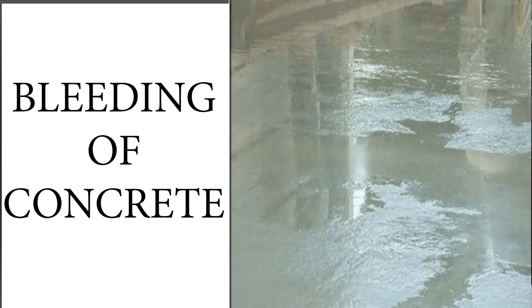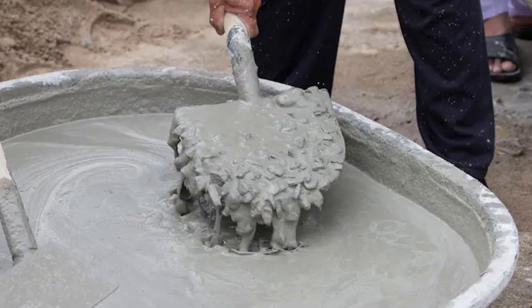Bleeding is a process by which the water in the concrete mix rises to the surface, creating a thin film of water on top of the concrete. This is caused by excess water in the mix or by the use of poorly graded aggregates.